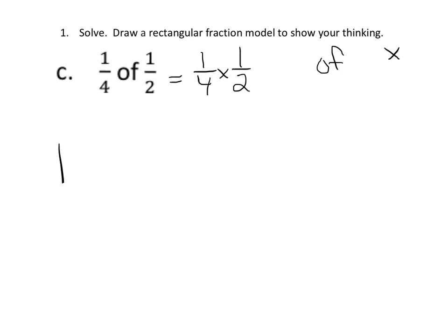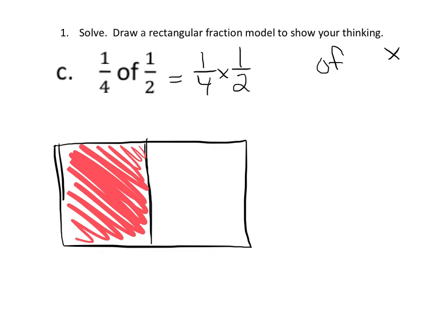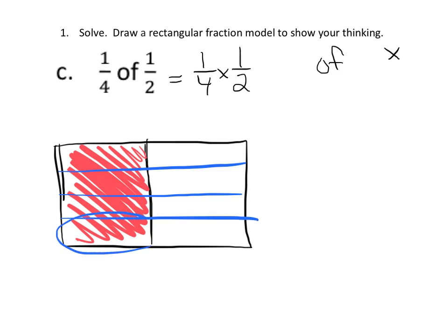We're going to start by thinking of a half. Here's my whole, and here's my half — I'll shade that in. Now the problem says 'a quarter of a half,' so we're going to take this half and cut it up into four equal pieces, continuing the lines all the way across. There are my four equal pieces, and right here is a quarter of a half — this side is a half, and this side is a quarter.